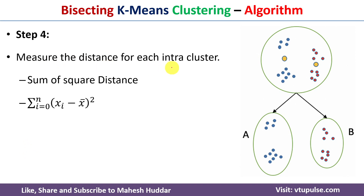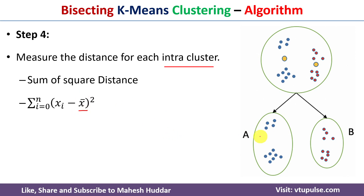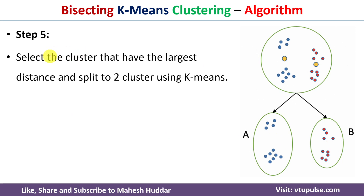In step four, we calculate the intra-cluster distance, also known as the sum of squared distance. The formula is: summation from i equals zero to n of (xi minus x-bar) squared, where n is the number of data points in the cluster, xi is each data point, and x-bar is the mean of that cluster. We calculate the sum of squared distance for both cluster A and cluster B.